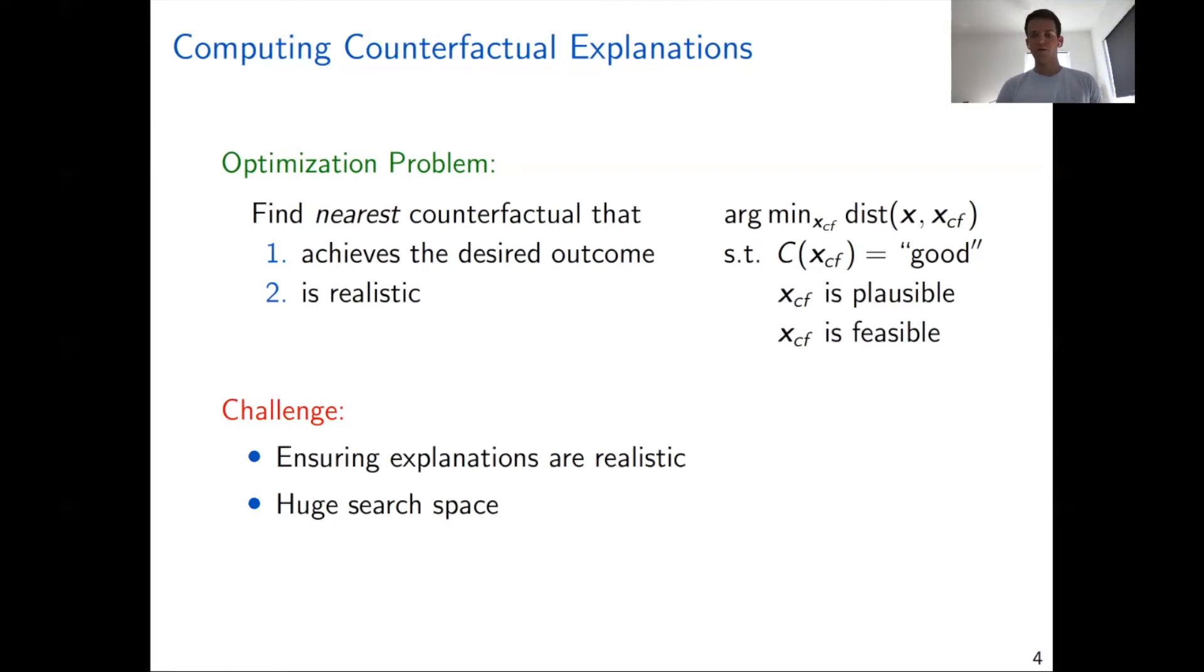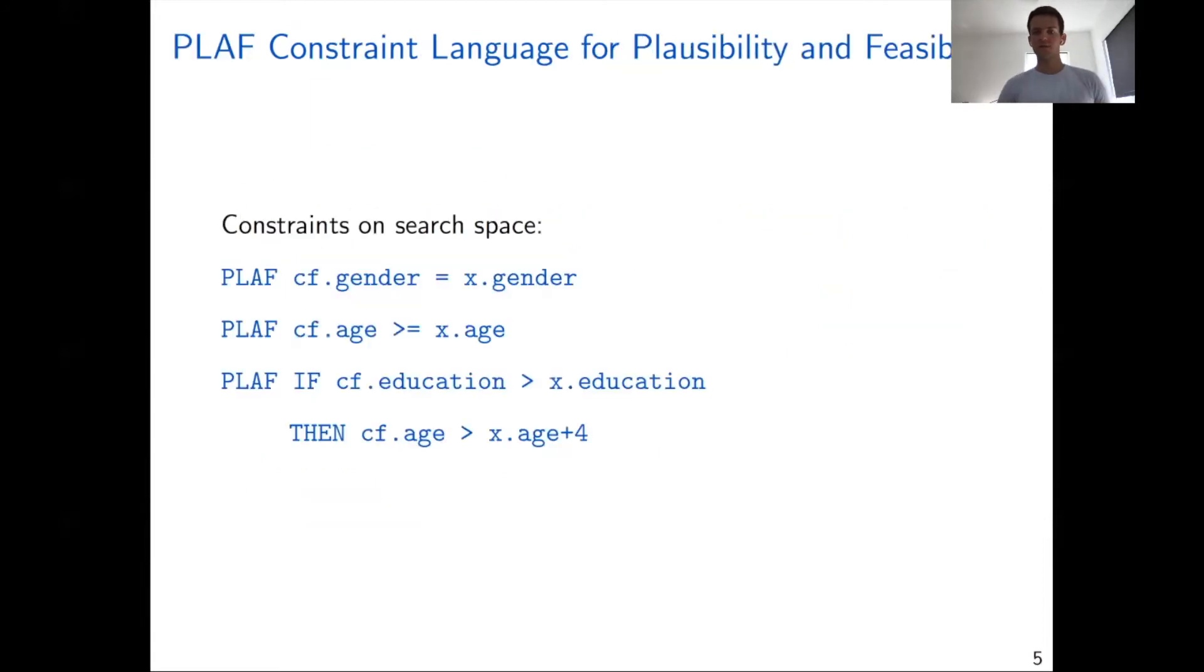The tool I present today, Gecko, was really designed in order to tackle both of these challenges. In order to ensure that the counterfactuals are realistic, we provide a high-level declarative constraint language that we call PLUF. This language essentially defines constraints that restrict the search space over which we search for counterfactuals. For instance, we can state that the gender of the customer cannot change or the age cannot decrease. We can also encode more complex constraints with implications. Each of these constraints is very easy to define, but together, they encode a lot of rich knowledge of the underlying domain.